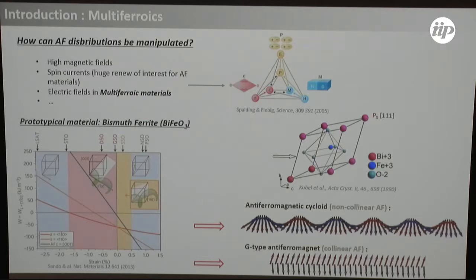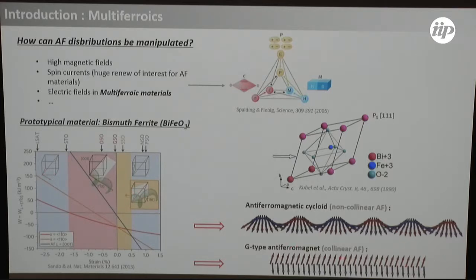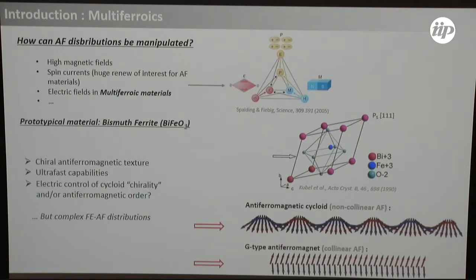We use multiferroics because it reduces the number of variants we need to image. For BFO, a great particularity of this system is that if you apply strain you can kill the cycloid and recover a simple G-type antiferromagnet. Depending on which substrate you deposit your BFO on, you can have cycloids in different directions, or purely G-type antiferromagnets. The idea here is to try to manipulate the antiferromagnetic order parameter, or the chirality of the spirals.